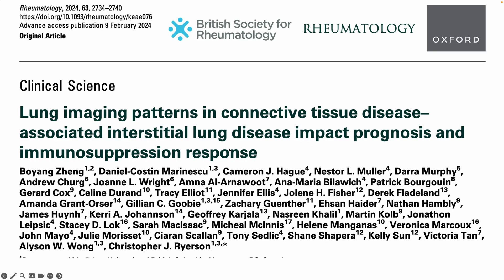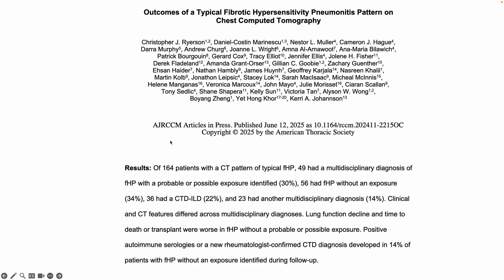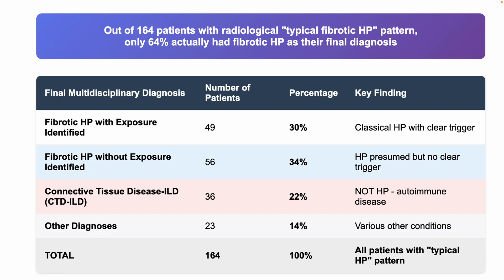This paper builds on an earlier study by the same group looking at lung imaging patterns in connective tissue disease ILD, where fibrotic HP was shown to be a pattern across different CTD-ILD entities — SLE having the largest component, RA having a significant number, and others. It has been known clinically over the last 30 years that many patients with a classic fibrotic HP pattern turn out to have other diagnoses, including connective tissue disease. This paper now demonstrates it much more clearly.